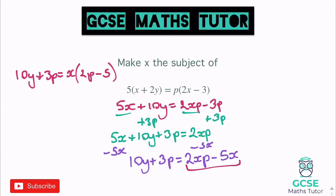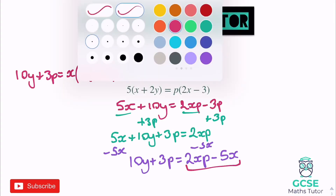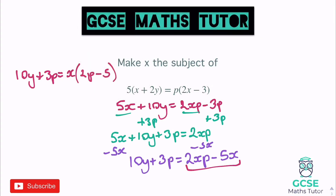Then exactly the same as last time, we're just going to divide by that bracket. So we get 10y plus 3p over 2p minus 5, and that equals x. There we go. So here are some for you to have a go at — only two questions. Pause the video, have a go, and we'll go over the answers in a second.